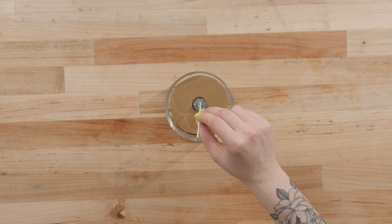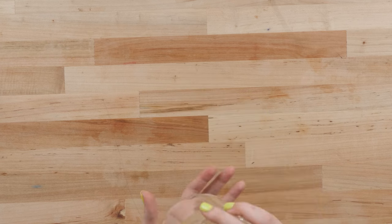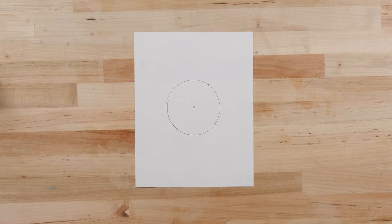Drop your template inside the container and center those wicks with confidence. If you're working with a clear jar, you can place the template underneath the jar.